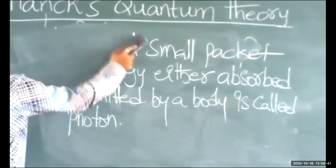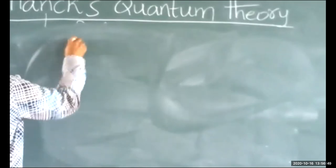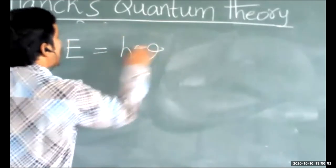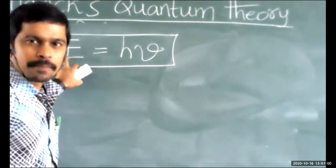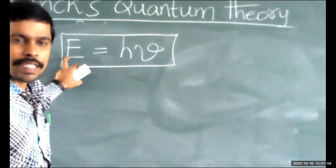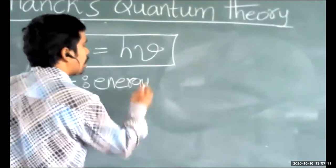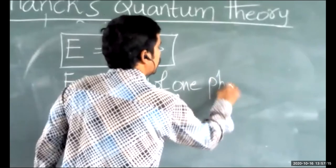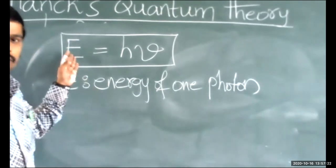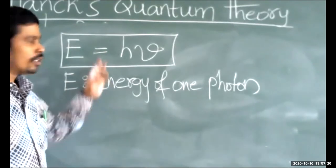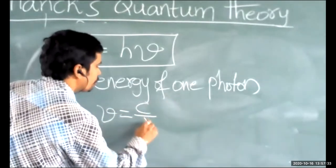According to Max Planck, the formula of energy is: E = hν. Capital E stands for energy of one photon. You have to remember this because we are going to solve problems based on this formula. E means energy of one photon, equal to h times ν. Nu means frequency of emitted radiation.